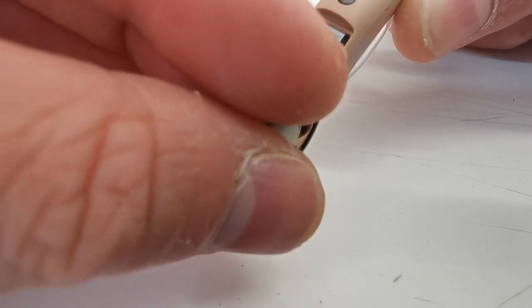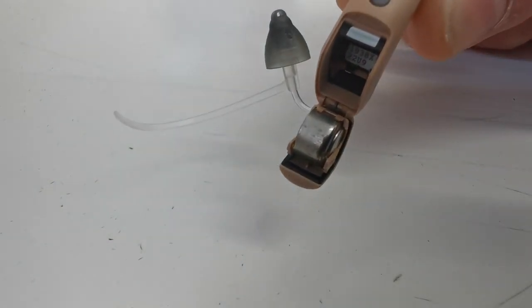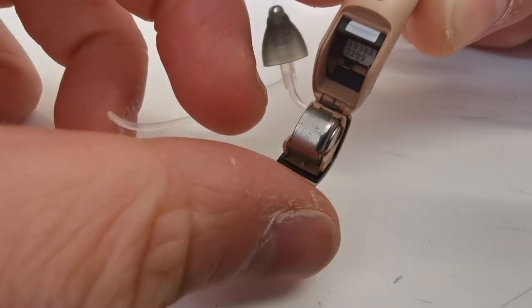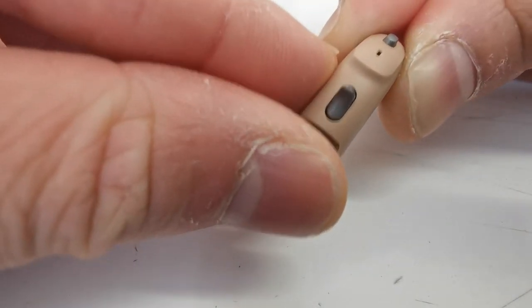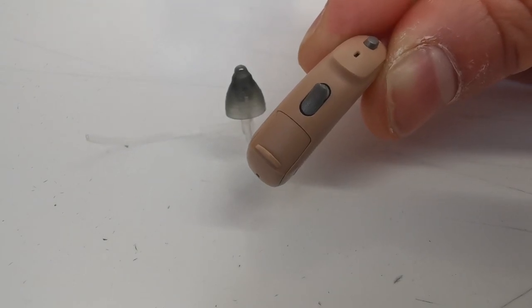The correct orientation is with the flat side towards the left. Close the door to activate the hearing aid. This is how you change a battery.